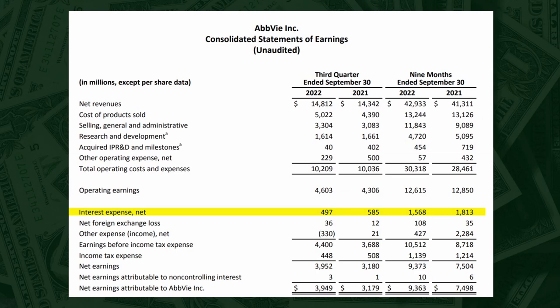Now we have interest expense. Interest expense is the cost incurred by a company for borrowing money, and it is reported as an expense on the income statement, reducing net income. If a company has lots of interest expense compared to its size, that could mean they are in a very competitive industry without a durable competitive advantage, or that they were the target of a leveraged buyout. Companies with a durable competitive advantage have none to very little interest expense. In any industry, companies with the lowest ratio of interest expense to operating income tend to be the ones with a long-term durable competitive advantage.